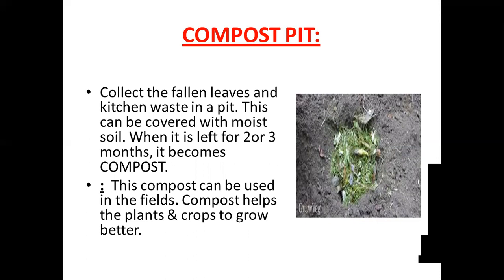This waste can then be covered with moist soil. After keeping all the leaves and kitchen waste, we should cover this pit with some moist soil. When it is left for 2 or 3 months, it becomes composted. Collect all the fallen leaves and kitchen waste in a pit, cover with moist soil, and after 2 or 3 months it becomes compost. This compost can be used in the fields. Compost helps the plants and crops to grow better. It is the natural manure for the plants.